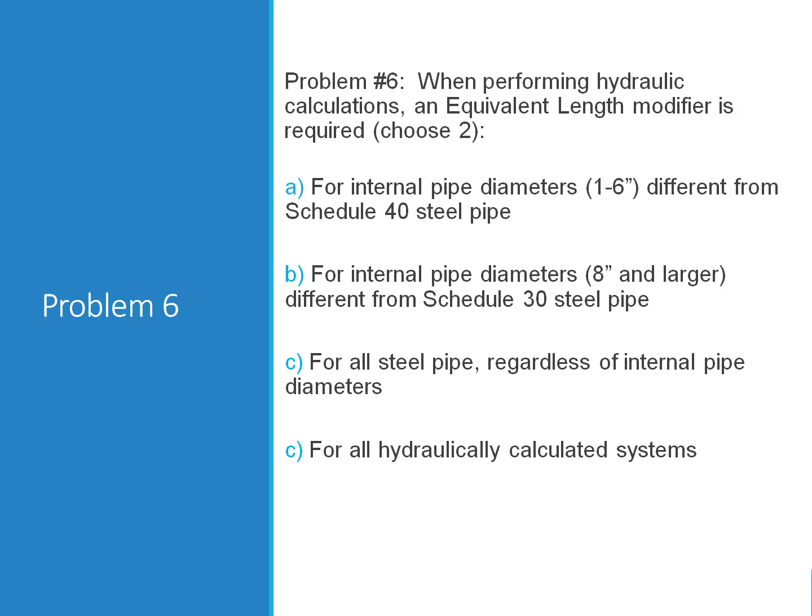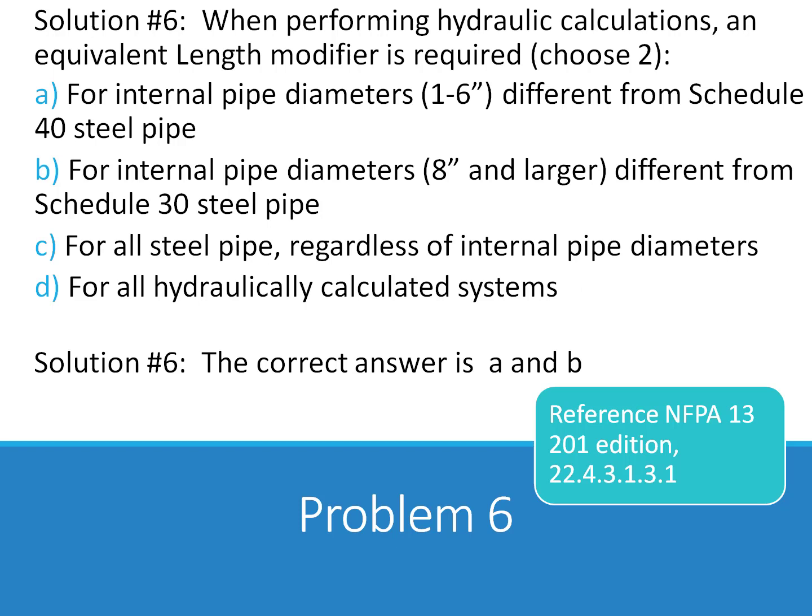For internal pipe diameters 1 inch through 6 inch different from Schedule 40 steel pipe. B, for internal pipe diameters 8 inch and larger different from Schedule 30 steel pipe. C, for all steel pipe regardless of internal pipe diameters. Or D, for all hydraulically calculated systems. The solution to problem number 6 is both A and B.